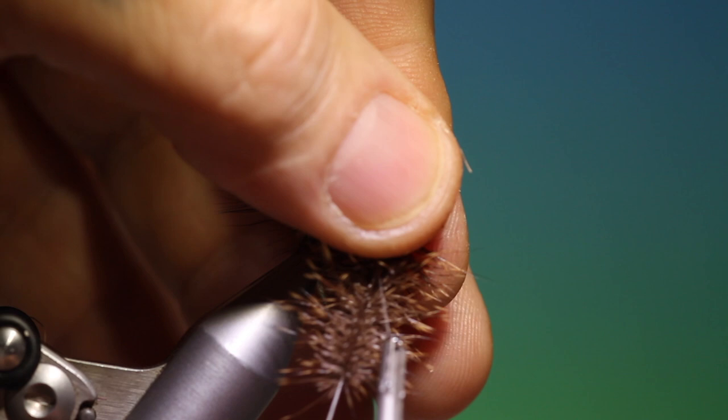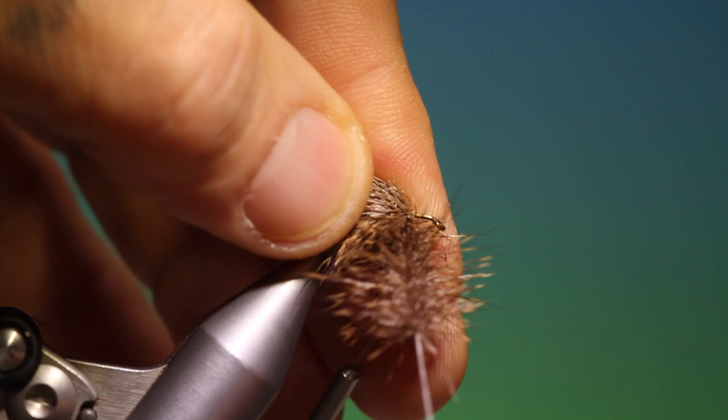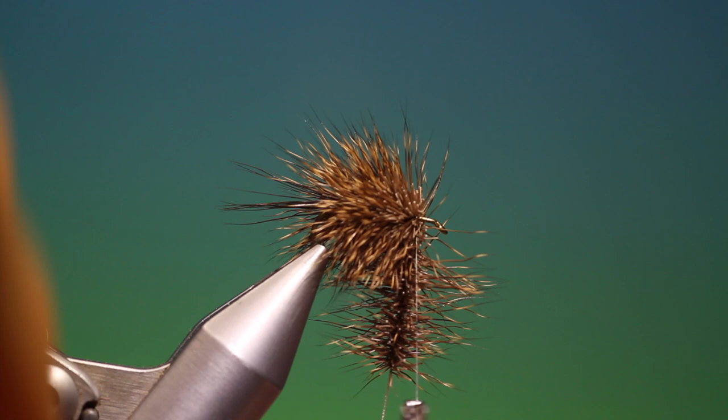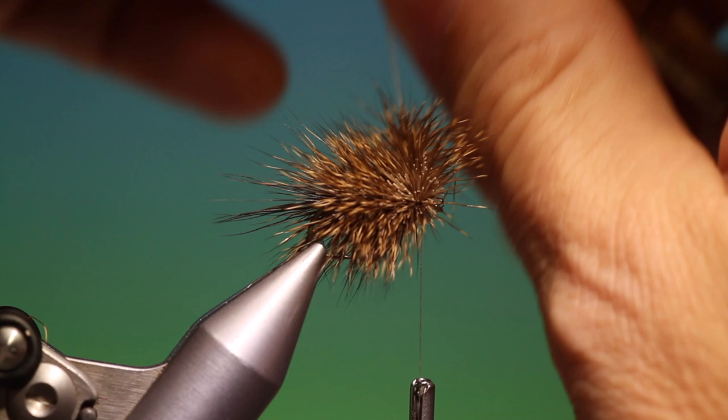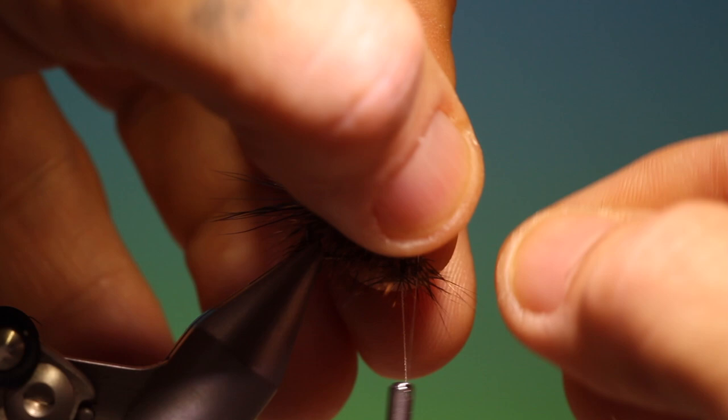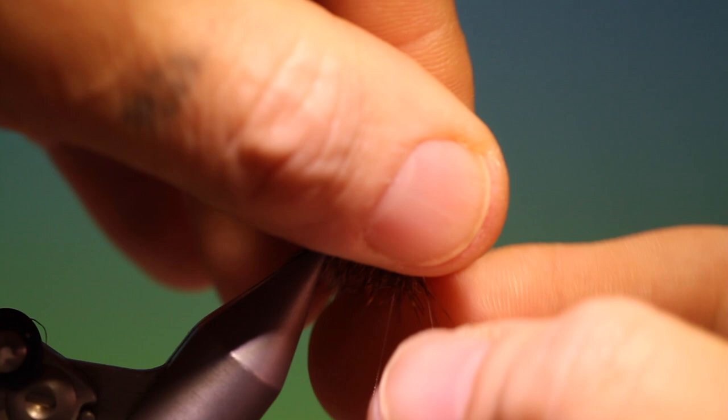Like so. Move my tying thread forward. Wind it all the way. Push that back a little. There we go. Just to make room for the hackle.